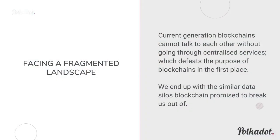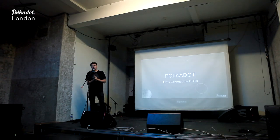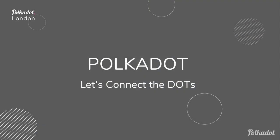What we end up with is this crazily fragmented landscape — tons of different blockchains in both the public and private space. Current blockchain technologies cannot communicate with each other, at least not in a trustless or decentralized manner. We kind of end up in similar data silos that blockchain promised us to break out of in the first place. Long story short, this is the reason why we came up with Polkadot and are trying to build it.